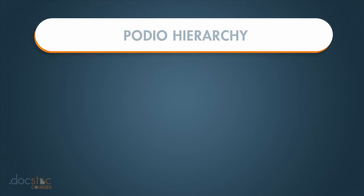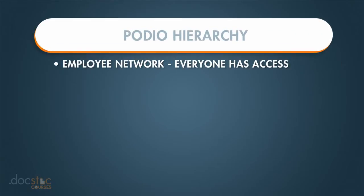The structure of Podio starts out with the employee network. Every one of your employees that you've given access to Podio will have access to the employee network. This is an area within Podio where people can post status updates on particular projects and activities and the organization as a whole, but none of your actual applications are going to be kept within the employee network, and employees won't have access to data and specific projects through the employee network. It's just a place for them to collaborate and communicate with each other.